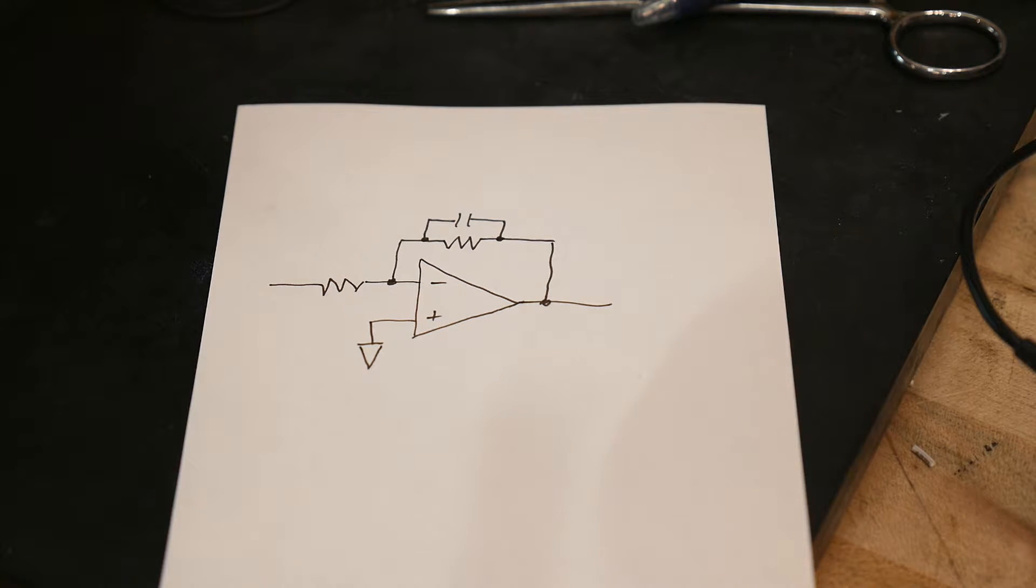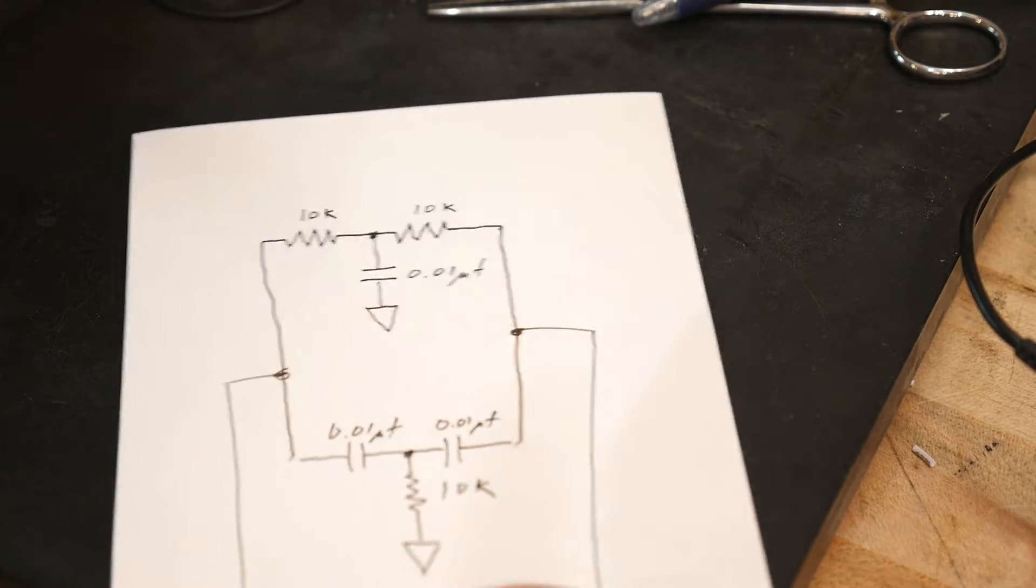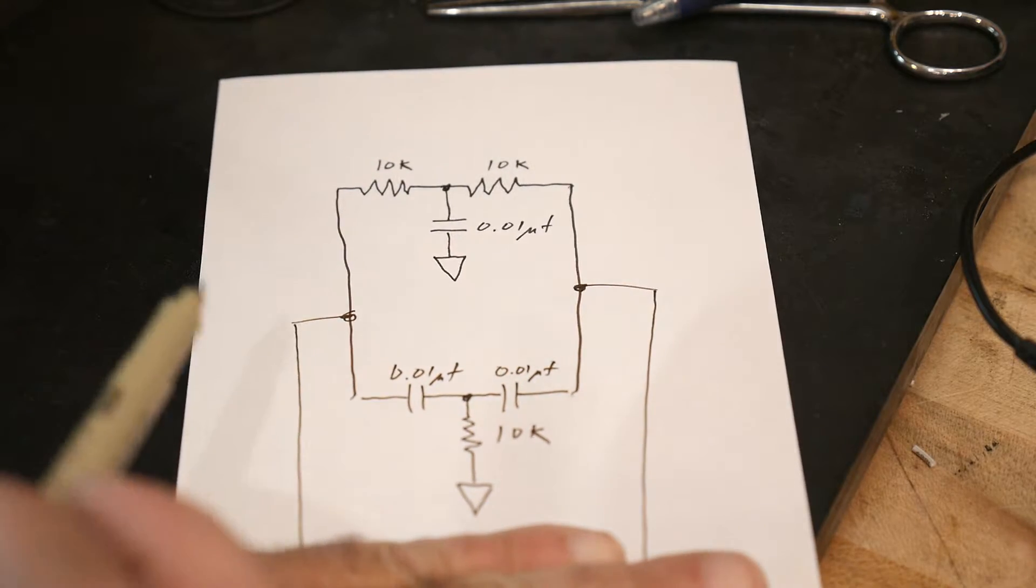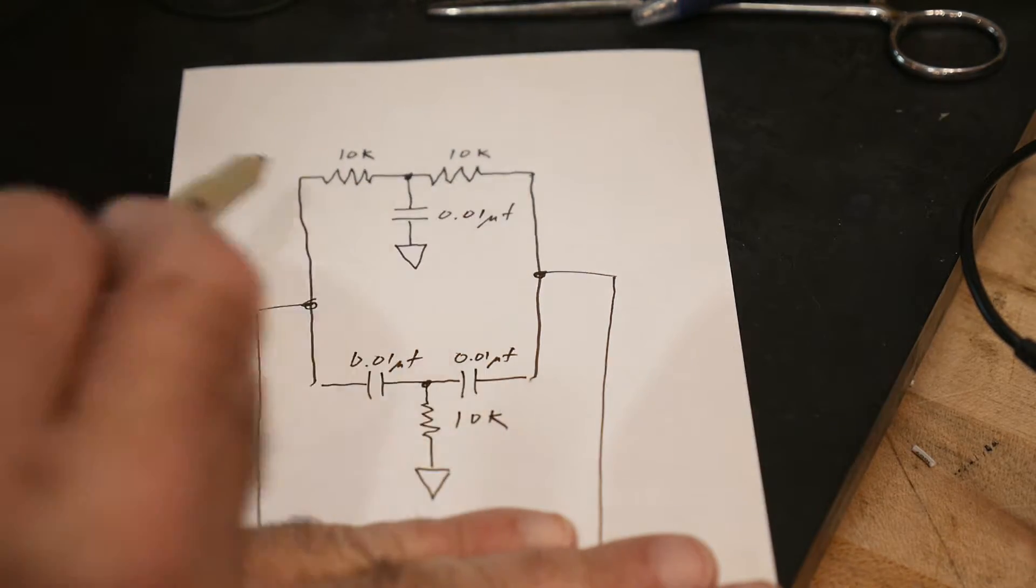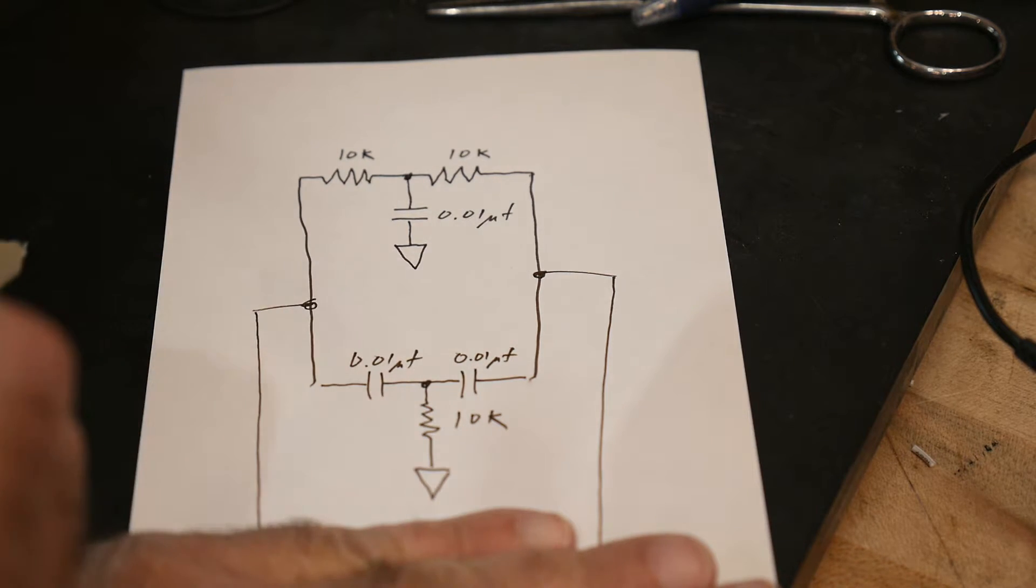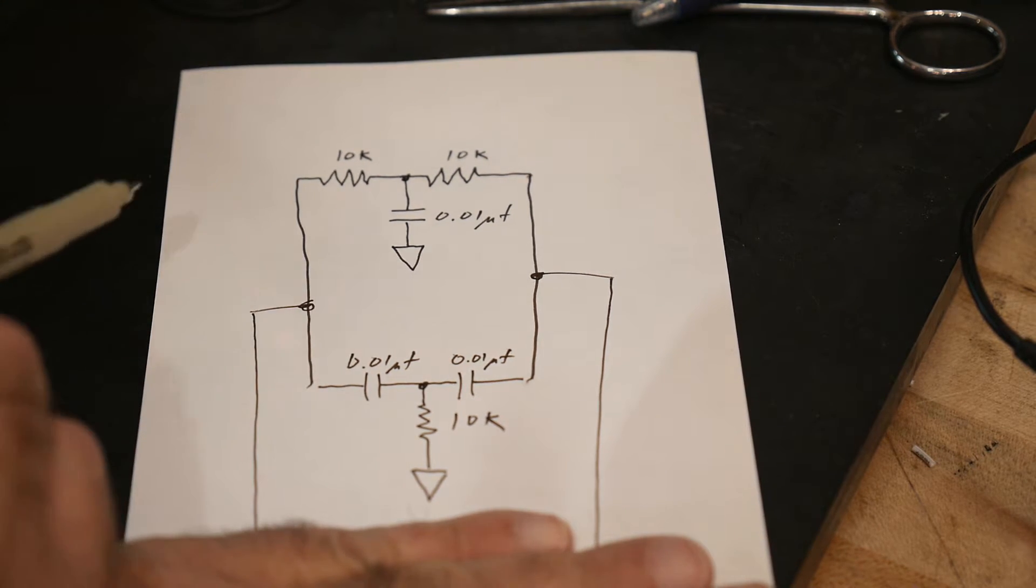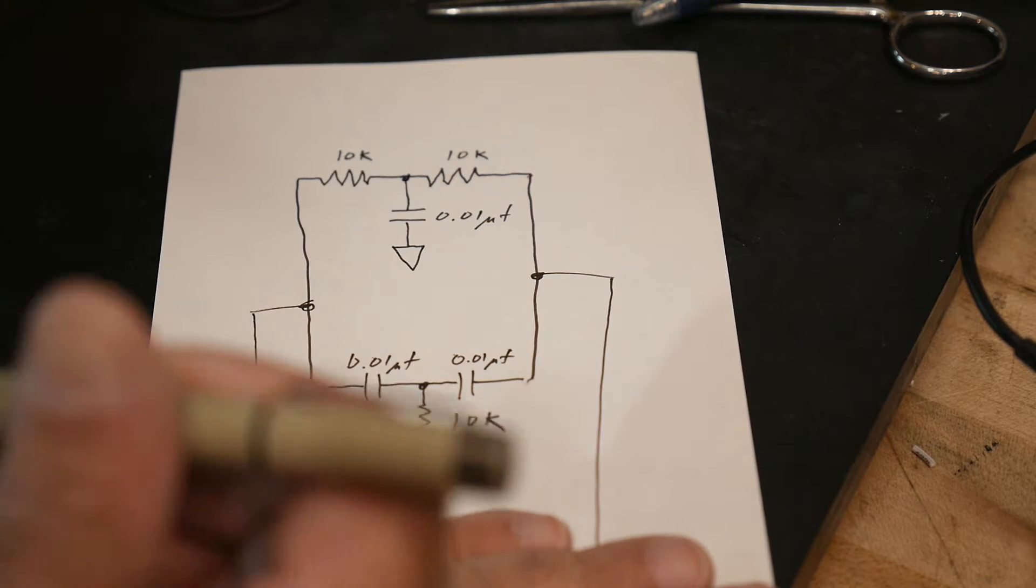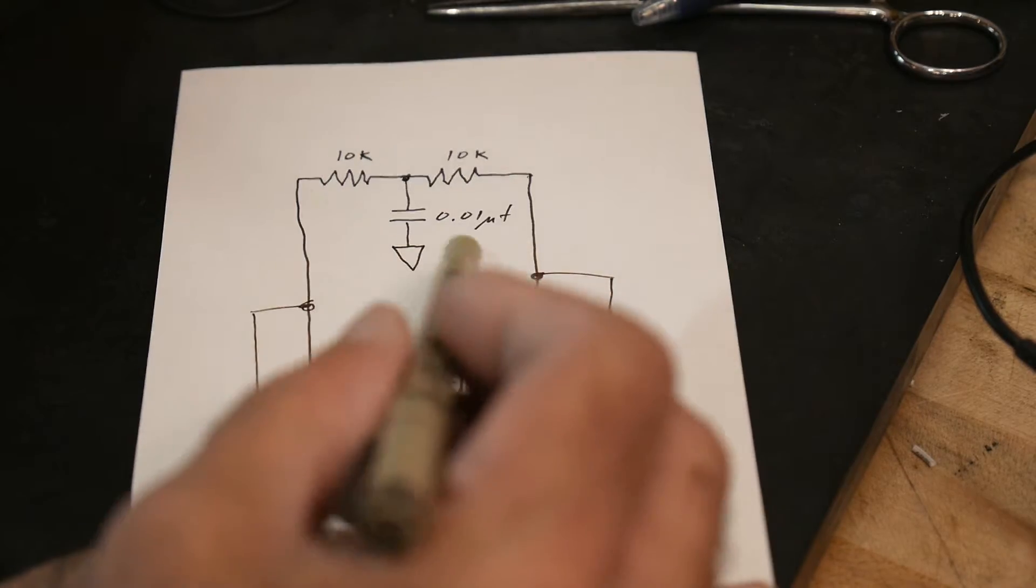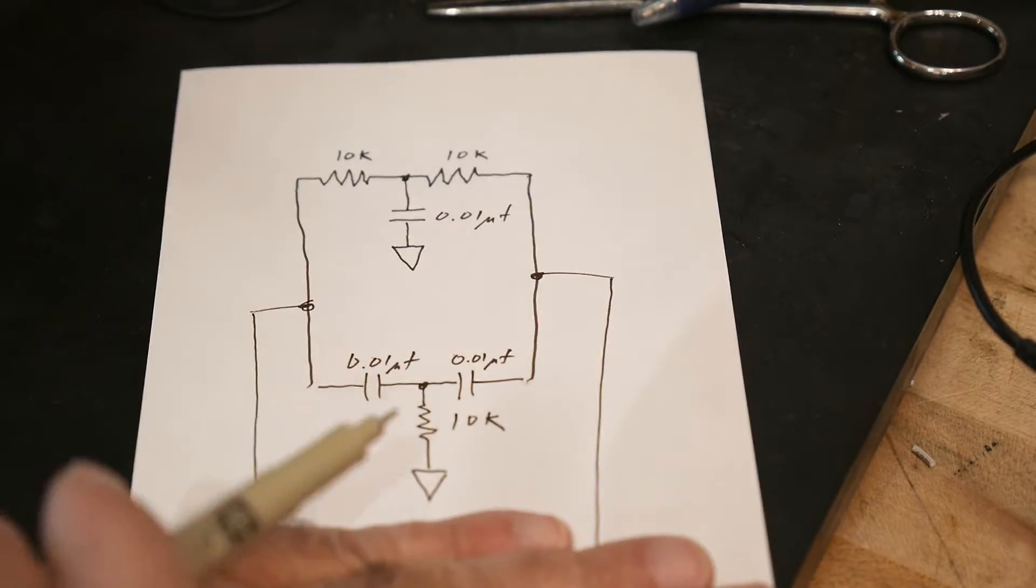If things do the opposite when they're in a feedback path than they normally would do in a non-feedback path, we can use that to our advantage. Remember our 10k, 10k, 0.01 microfarad twin-T filter. We saw this attenuating the response of the circuit at 2 kilohertz. It had low gain at 2 kilohertz and high gain everywhere else. So it was a notch filter.